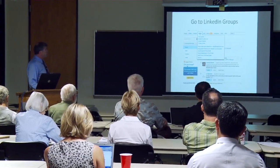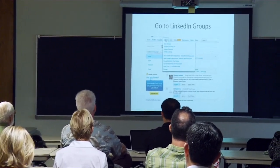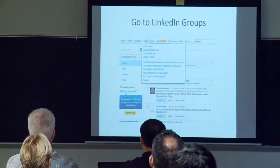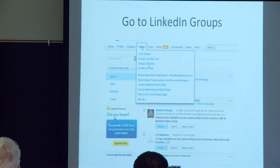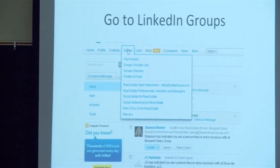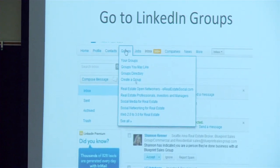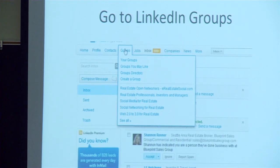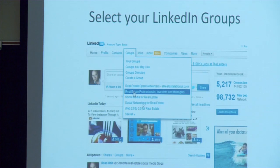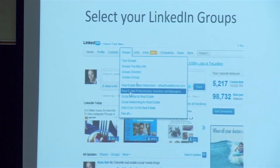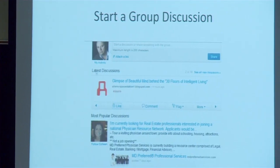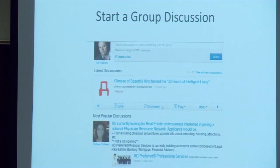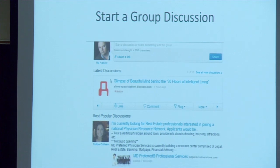If you go to Groups, just go to the top here and select Groups — you'll see the options: your groups, groups you may like, and groups directory. This is where you can go looking for groups and also where you can create your own group. Below that line will be all the groups that you either run yourself or belong to, or both. Select one of your groups and you'll see what's called a discussion feed on the face of a group, where you can come in and start a discussion.